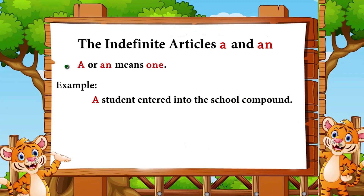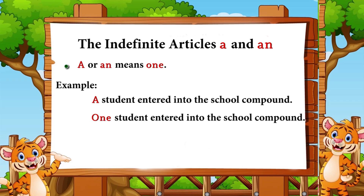Indefinite articles are adjectives — they modify the noun following them. 'A' or 'an' means one. Example: 'A student entered into the school compound.' When we say 'a student,' it means one student. We can say 'one student entered into the school compound.'